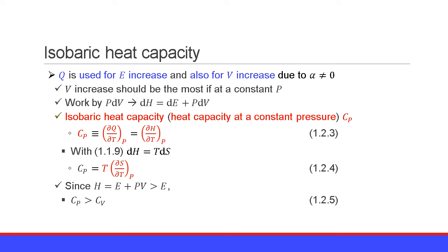Because the enthalpy H equals the internal energy E plus pressure P times volume V, enthalpy is larger than internal energy E since both pressure and volume are positive. Therefore, the isobaric heat capacity Cp is greater than the isochoric heat capacity Cv. Equation 1.2.5.